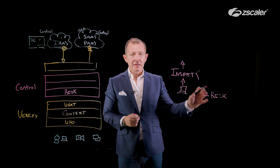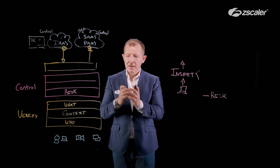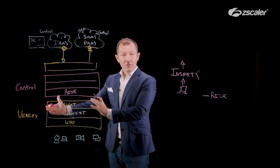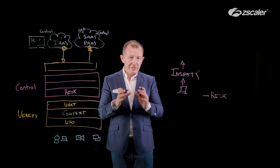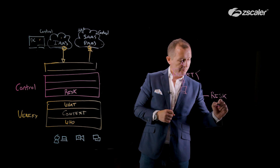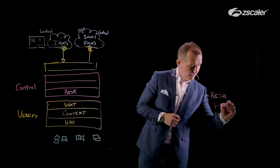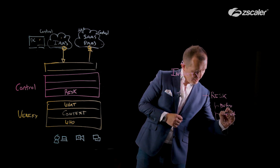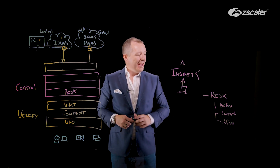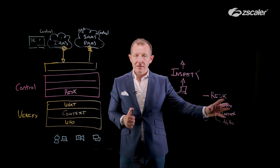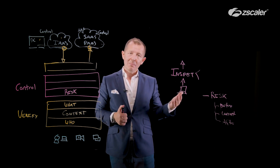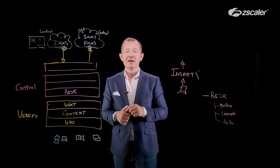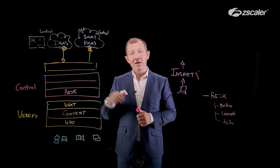When we look at risk, we need to consider it in terms of what the initiator is — whether it's the user, the thing, or the workload — and understand the behavior of what is actually happening. Risk assessment is about whether a user, thing, or workload is doing something risky now, was doing something risky before, and will it do something risky in the future. So that risk is broken down into a behavior analytics of before, current, and after.